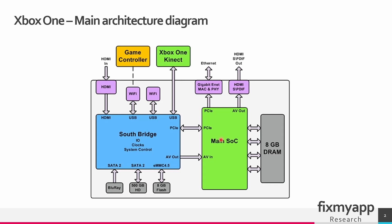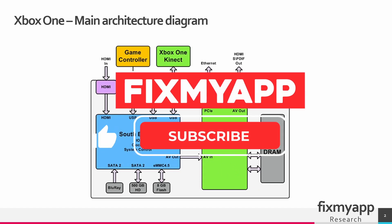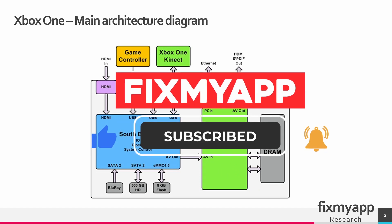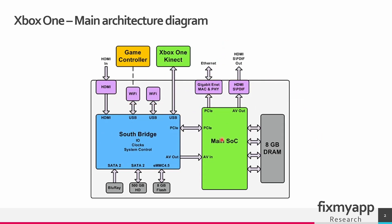The SOC is a chip that combines different components into a single chip. It includes a CPU — central processing unit — and GPU — graphics processing unit — a memory controller, and a NordBridge. The SOC is responsible for executing the instructions of the games and applications running on the console, as well as handling different system level functions.